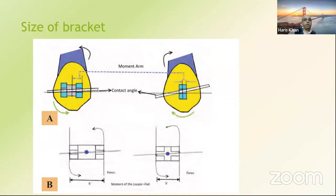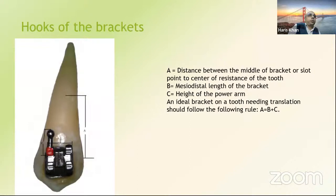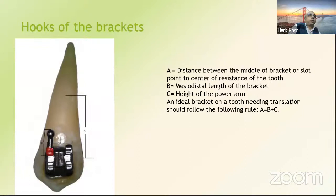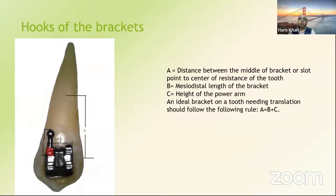Regarding contact angle and friction: wider the bracket, more the contact angle, less would be the friction — so low-profile brackets which are smaller have a limitation. The hook of the bracket is also important: the distance from the mid of the bracket slot to the center of resistance should equal the hook length, but we cannot make such a wide bracket. So hooks were incorporated in the system. Longer the hook in the buccal segment bracket, less the loss of second-order movement or tip during retraction or mesialization — you see that effective tip is more with a longer hook.